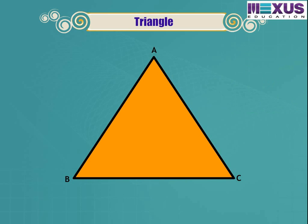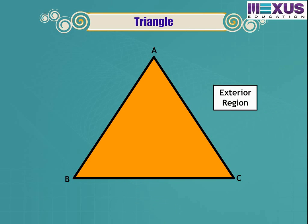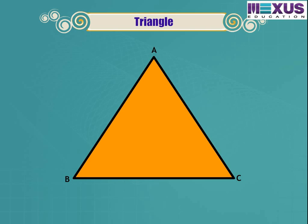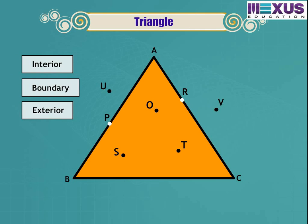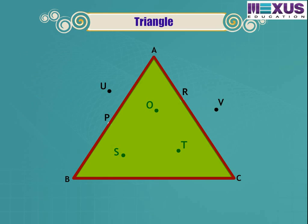Triangle ABC can be denoted as △ABC. A triangle is a polygon, so it has an exterior and an interior region. In triangle ABC, points O, S, and T lie in the interior; points P and R lie on the boundary; and points U and V lie in the exterior. Therefore, a triangle divides a plane into three parts: the interior, the boundary, and the exterior of the triangle. The boundary and interior together are called the triangular region.